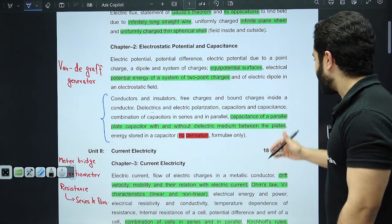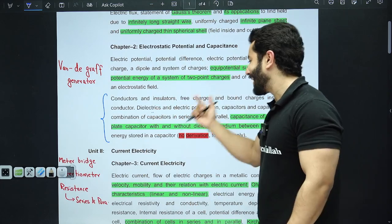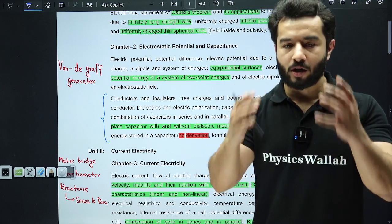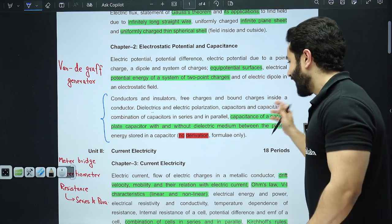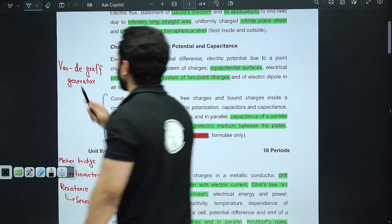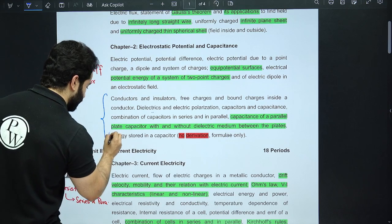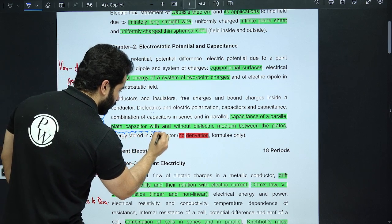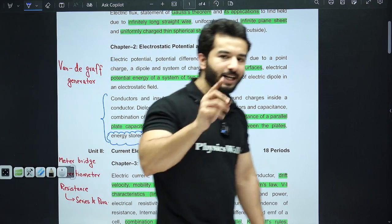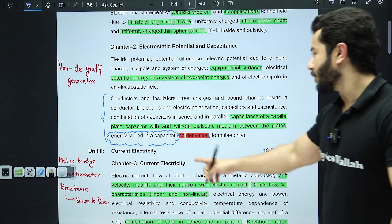In this chapter, the capacitance portion is actually more important. Capacitance of a parallel plate capacitor with or without dielectric medium holds more importance than the other topics. Then energy stored in a capacitor—this is that topic whose formula needs to be remembered. That means you only need to remember the formula, don't worry about the derivation. It is half CV squared. Move on, save your time.